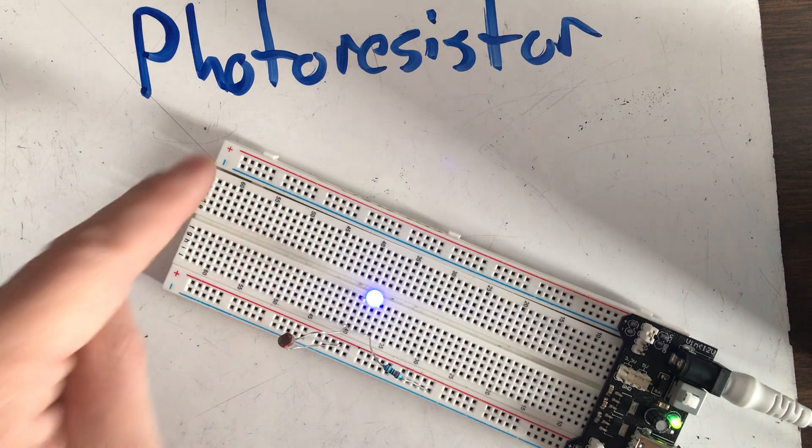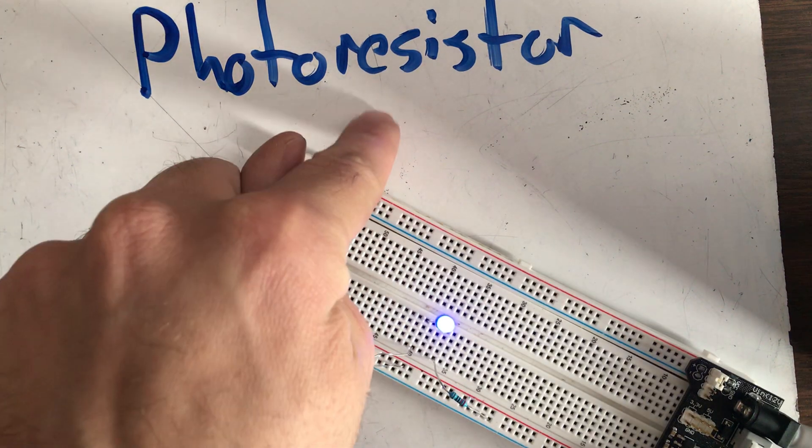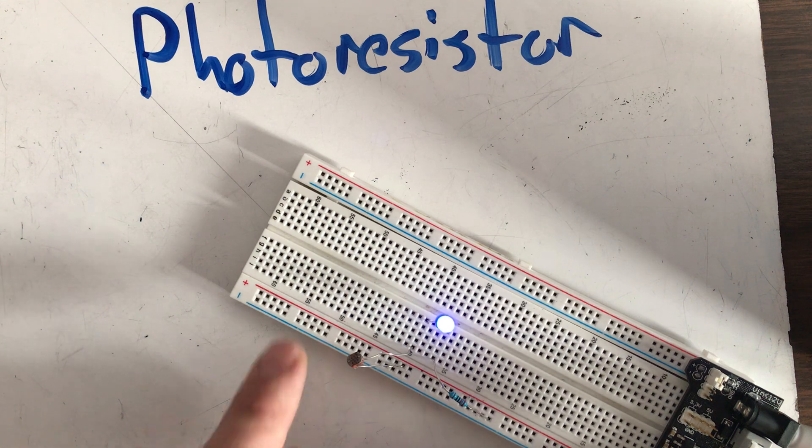Again, this thing's called a photoresistor. It uses light photo to resist electricity. All right, thanks, and I hope that was helpful.